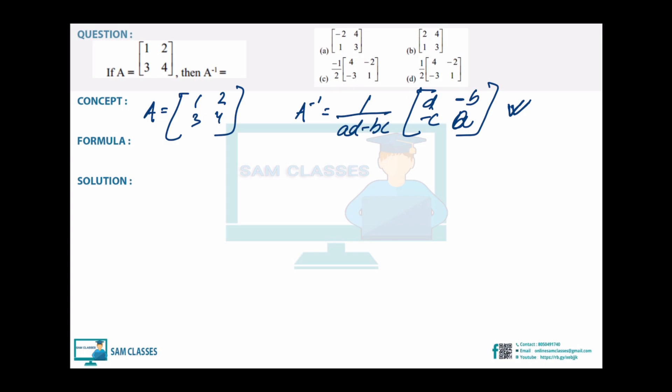Formula should be on your fingertips — time is of the essence. Putting values: det = 1×4 - 2×3 = 4 - 6 = -2. So 1/det = -1/2. The matrix becomes (1/(-2)) × [[4,-2],[-3,1]].